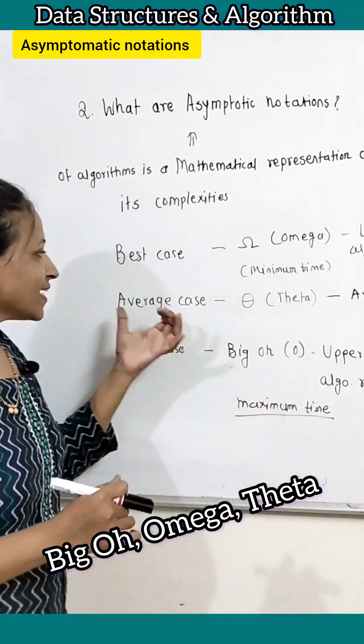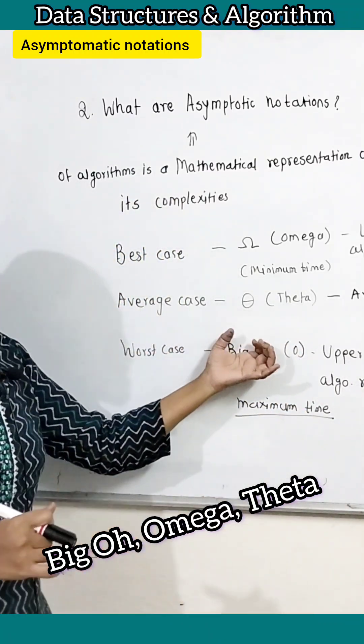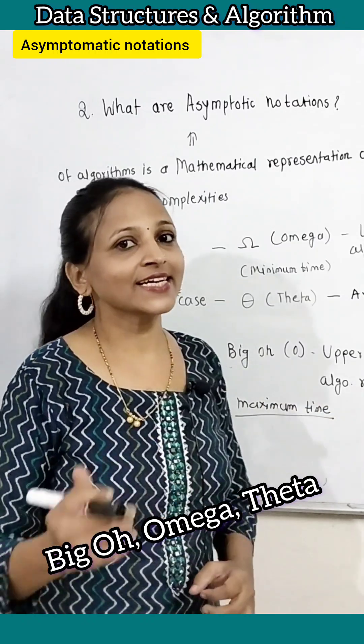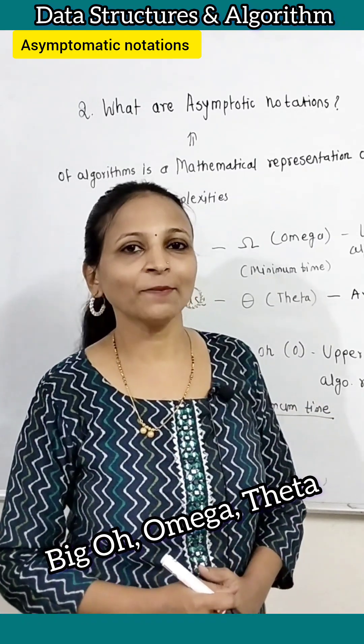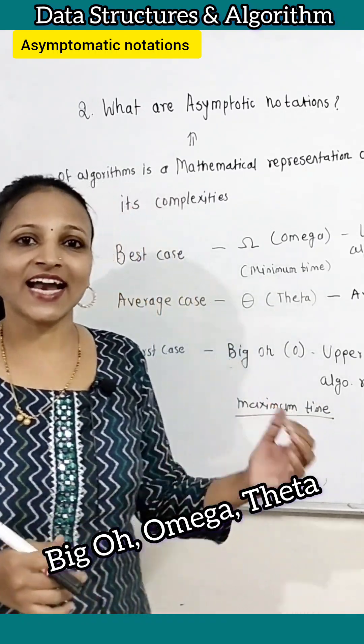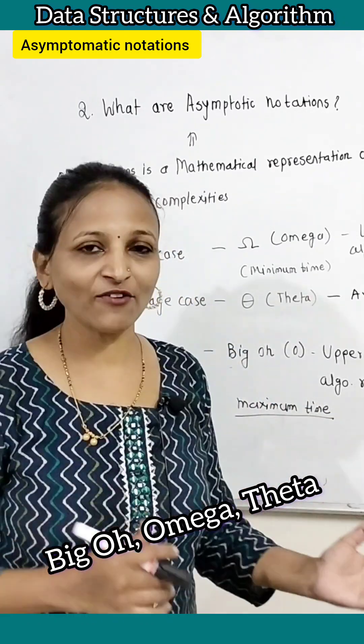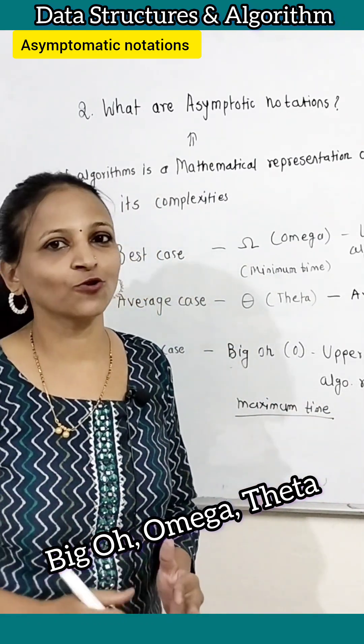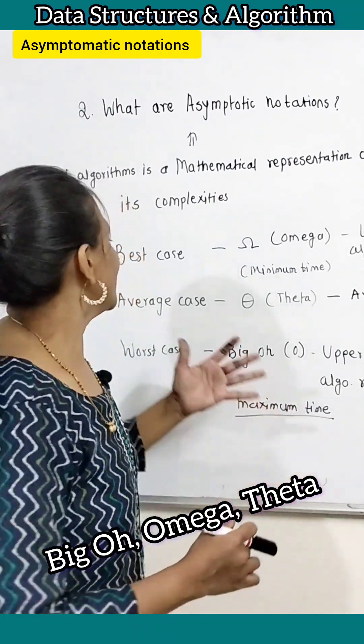To represent average case time complexity or space complexity, theta notation can be used. That is nothing but the average time or space taken by an algorithm for its execution.